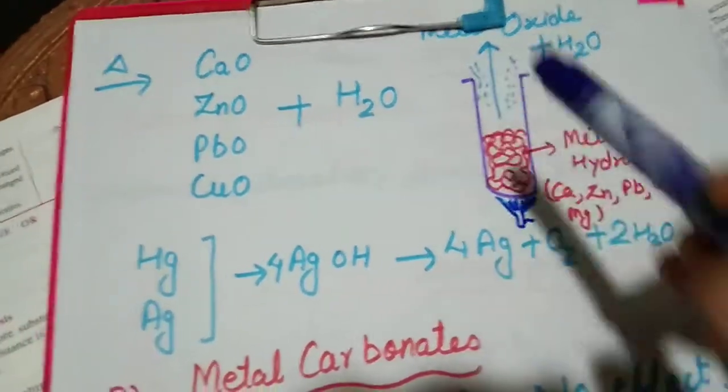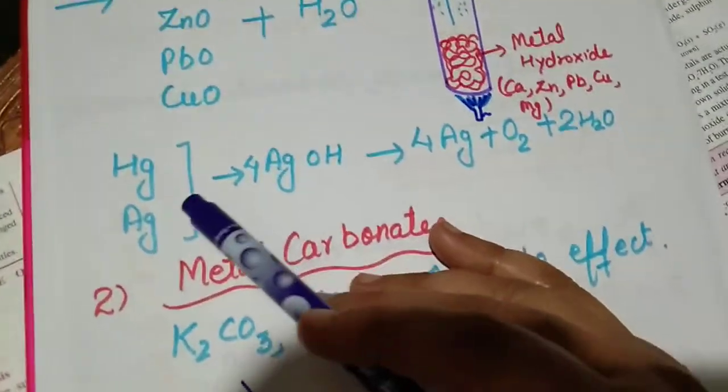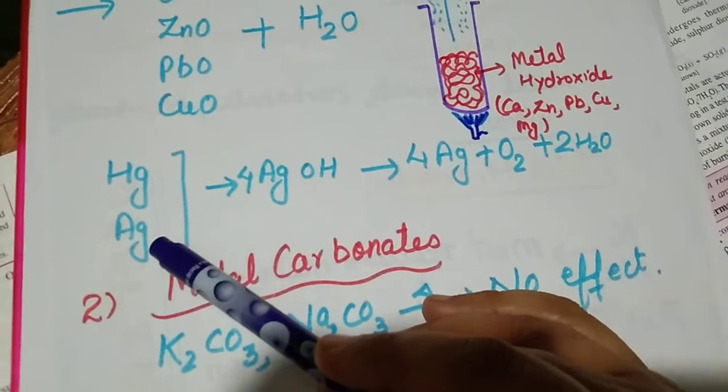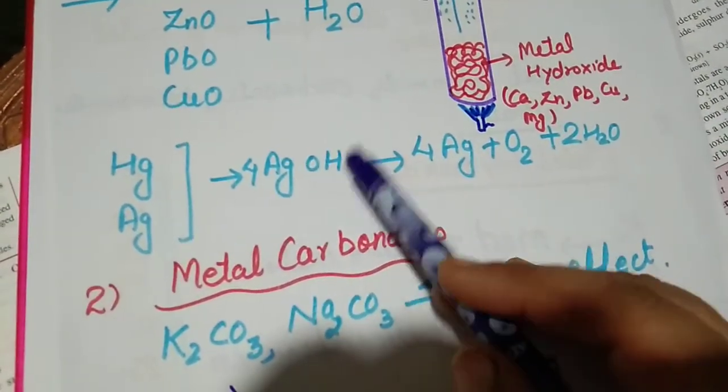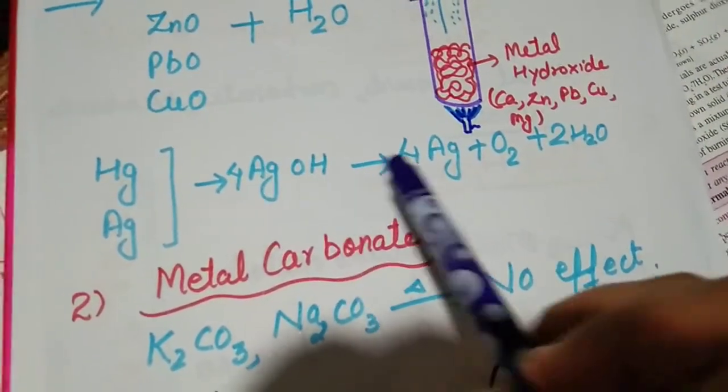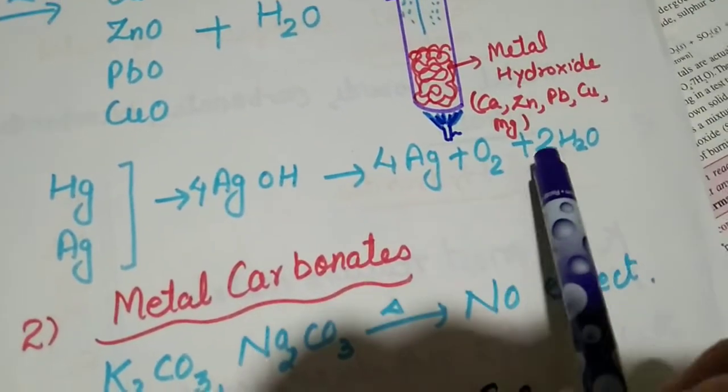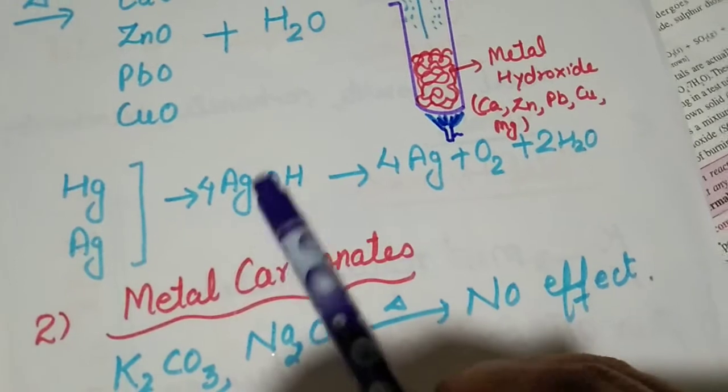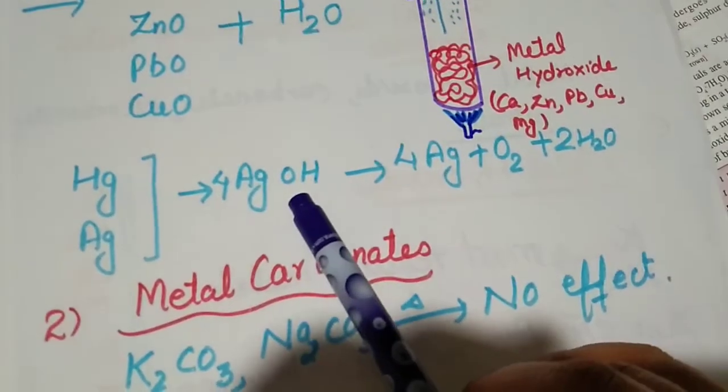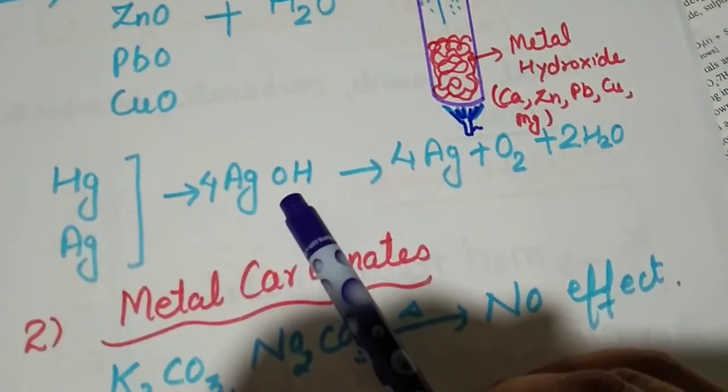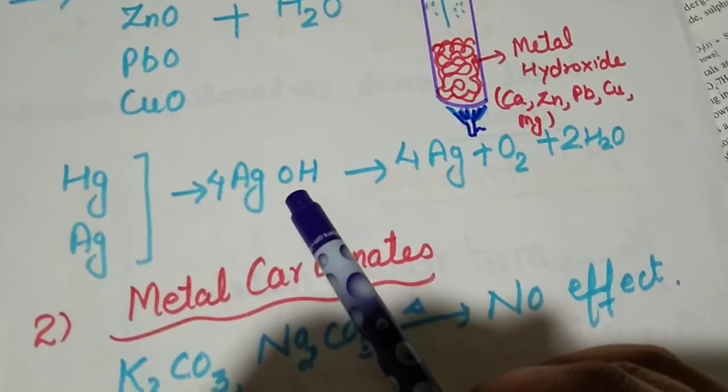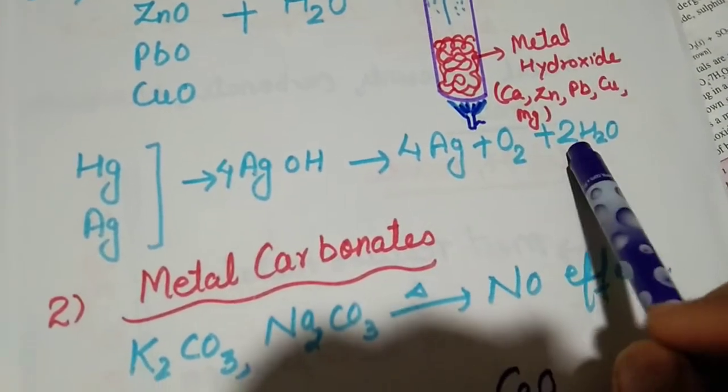After that comes mercury and silver. As we said they are least active, so when their hydroxides break they give metal, oxygen and water. The less reactive the metal, the easier its hydroxides or compounds will break, means they will give more products.